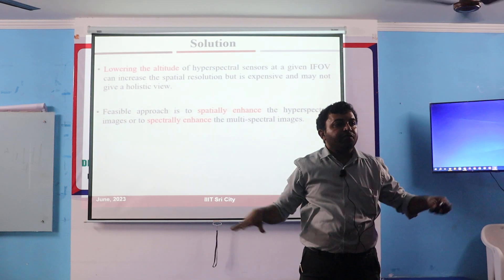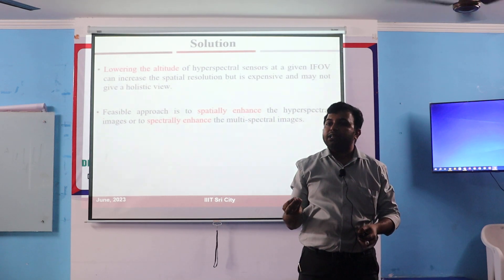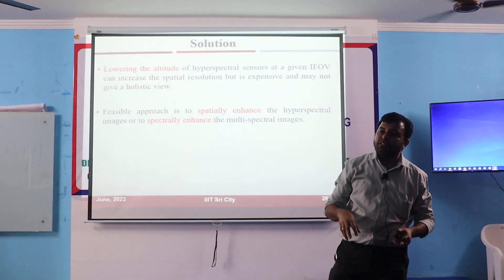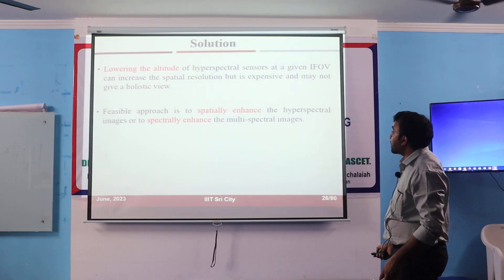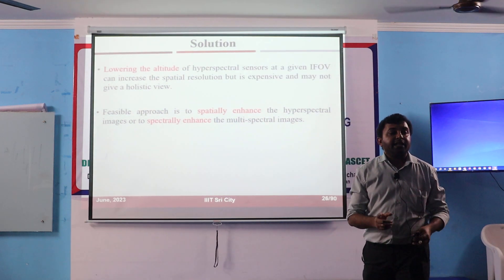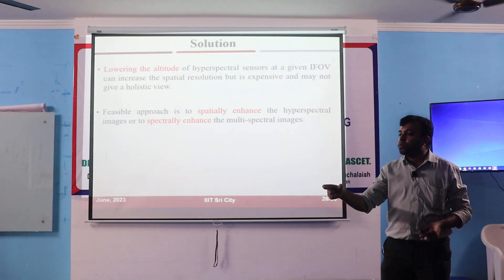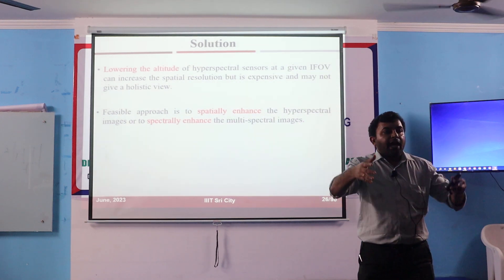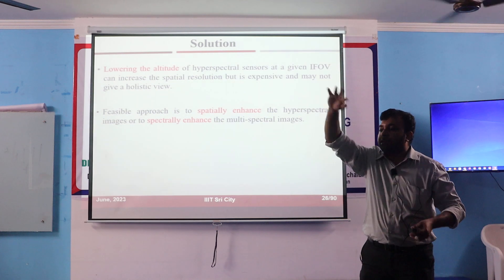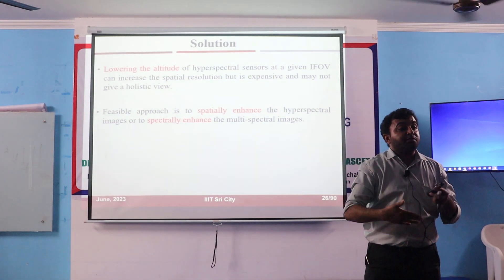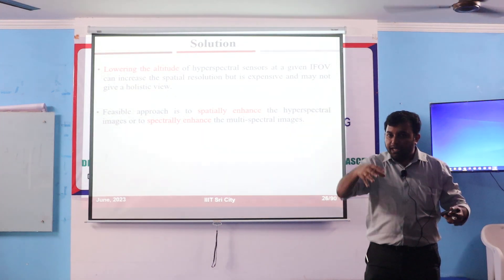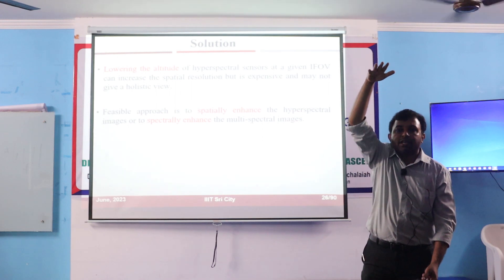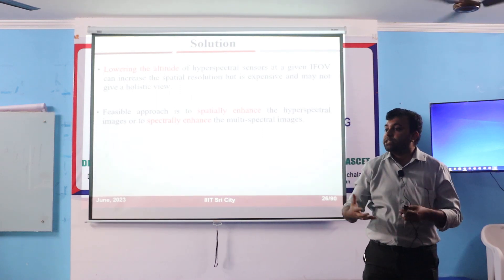Another thing is satellites give you a wide area view. These two aspects — wide coverage and economic feasibility — demand the use of Earth observation satellites or remote sensing satellites. So my problem is that I cannot have both high spatial resolution and high spectral resolution images. So I have to take a high spectral image with many bands — maybe 400 bands, 300 bands — and improve its spatial resolution.